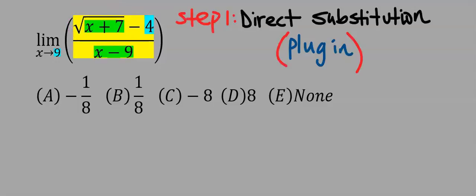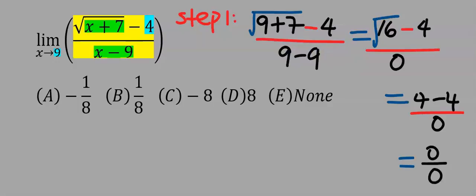The first step is let's apply direct substitution. That is, plug in to the function wherever we see x, we're going to substitute 9. And we got 0 over 0, which is indeterminate.